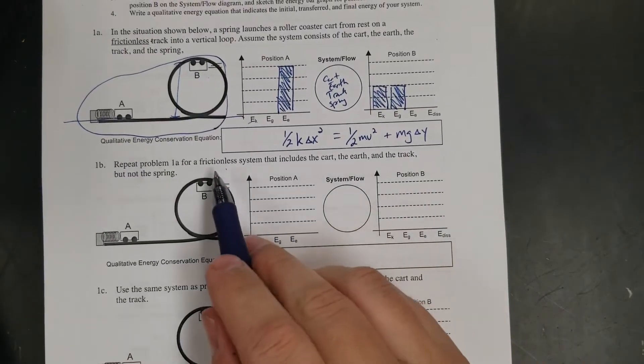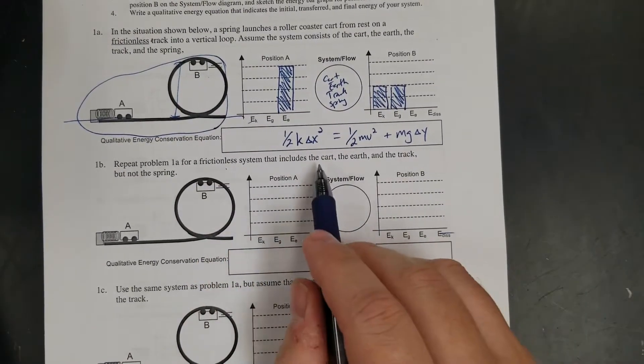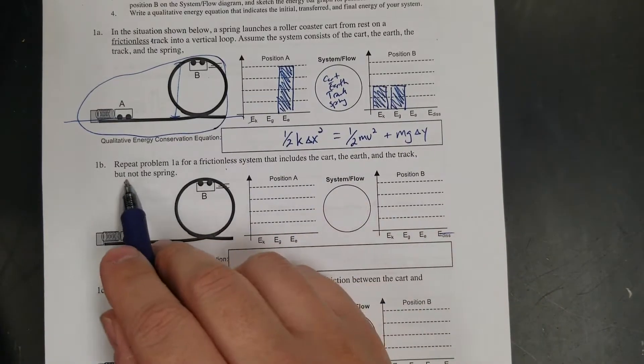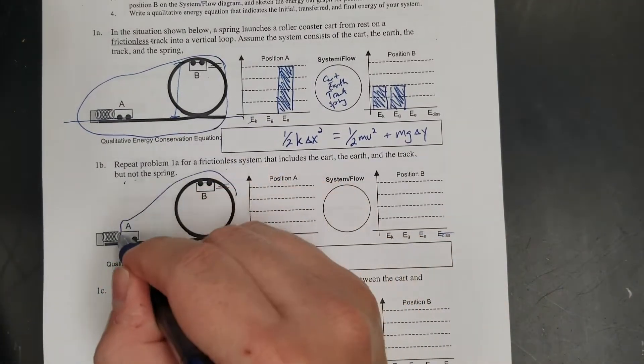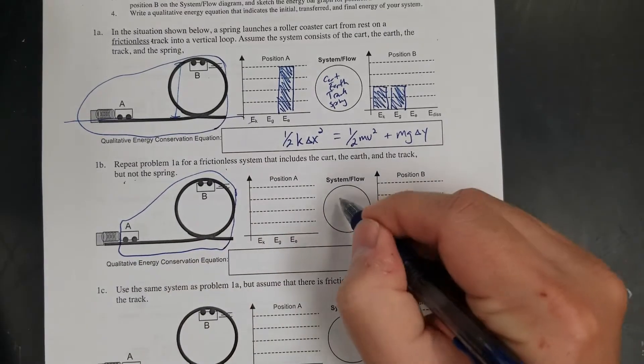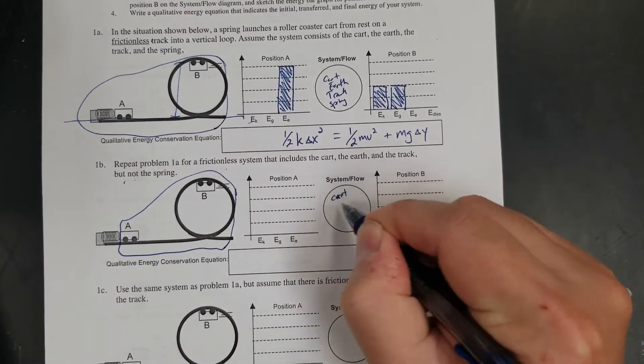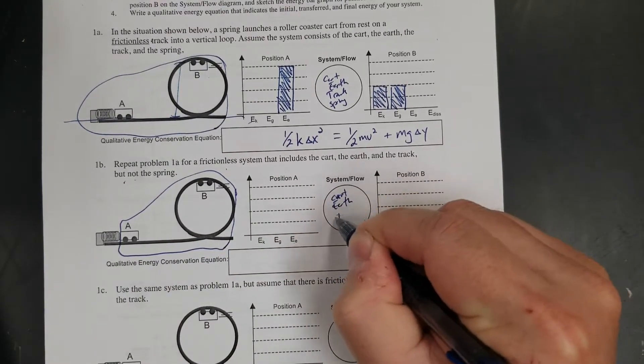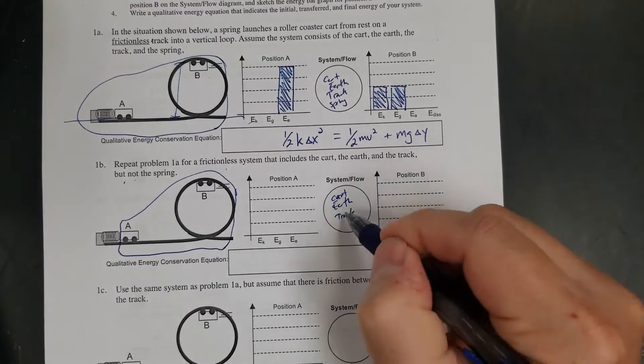Second example. Frictionless system still, so there's no heat. Cart, earth, track, but not the spring. So my system is cart, earth, track, no spring.